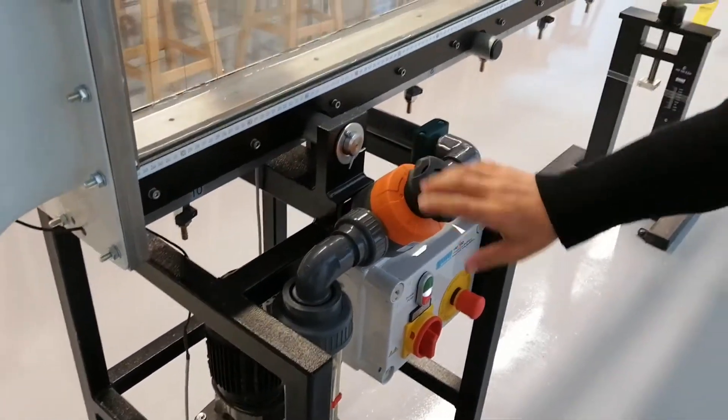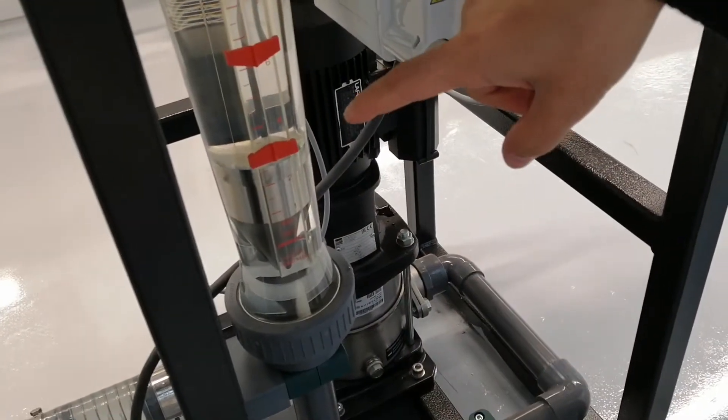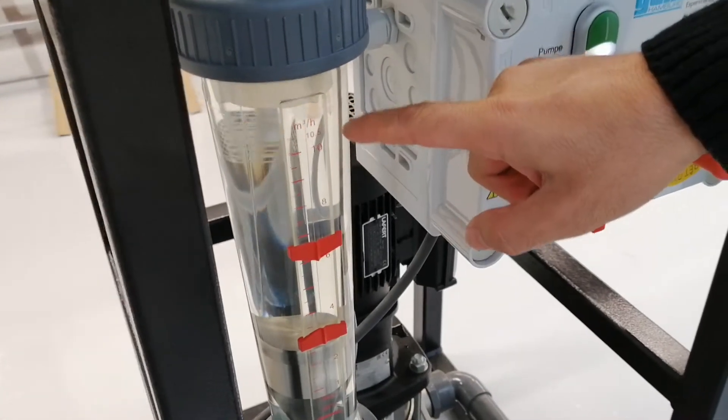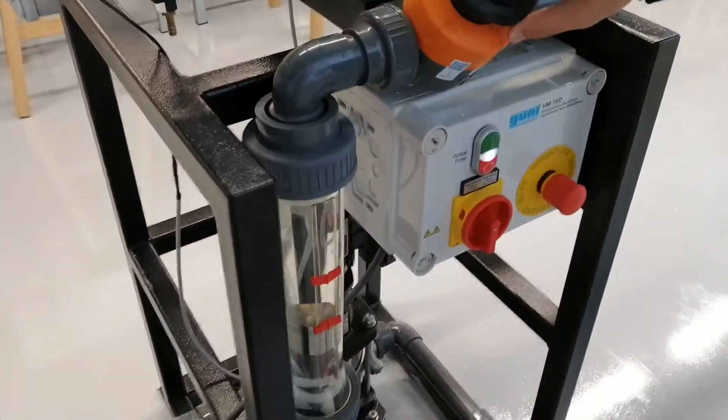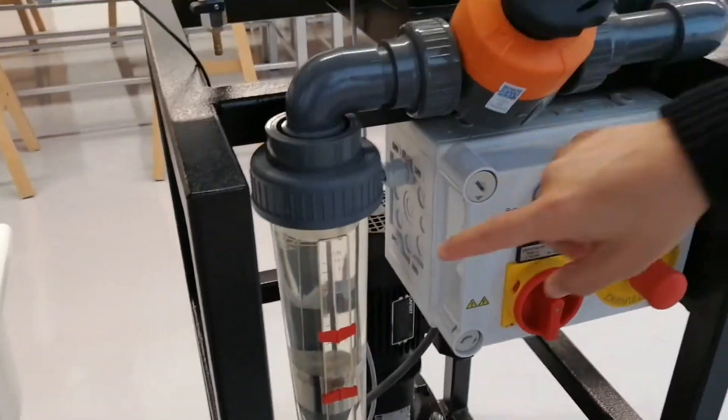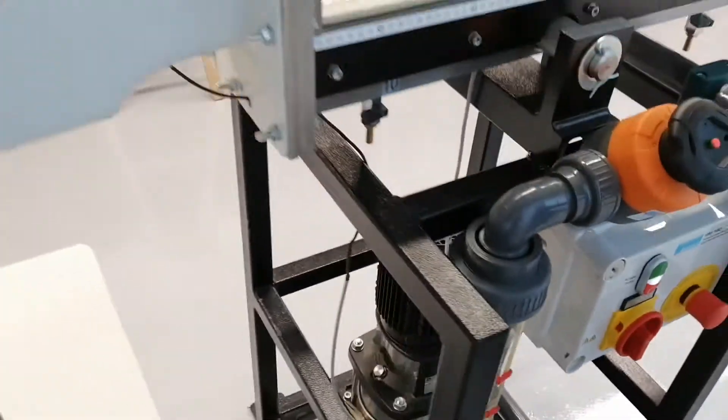You can see the rotameter, which measures our discharge. Its unit is cubic meters per hour. As you see, now the flow rate is 4 cubic meters per hour.